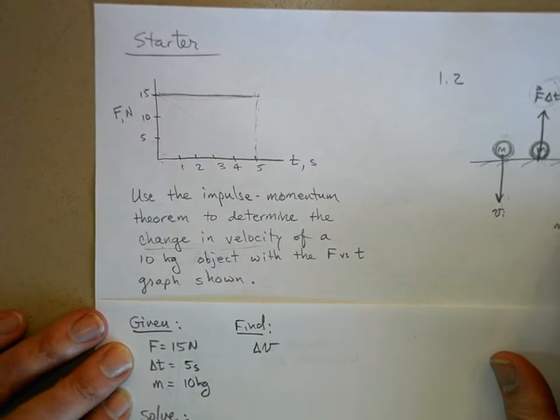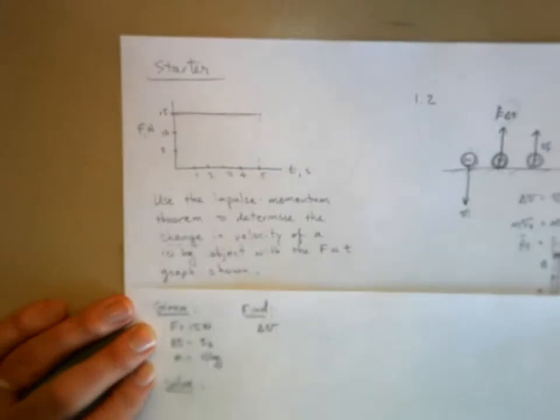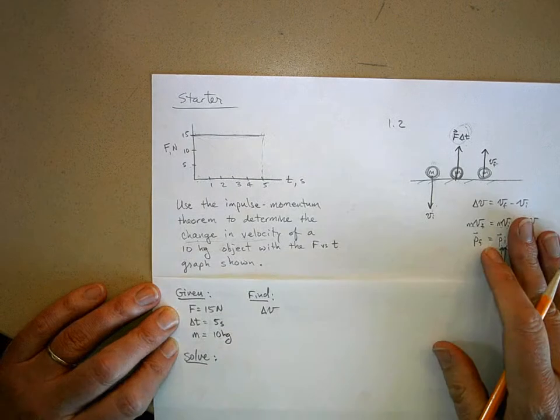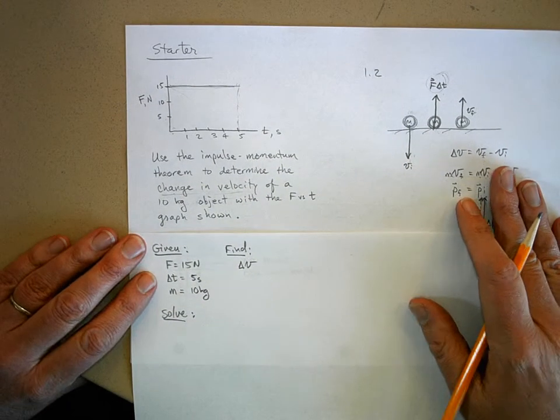The impulse momentum theorem, I'm off camera. Let's see now. You who sit in the front, your job is to tell me when I'm off camera. So therefore, it's not my fault if I go off camera. All right.